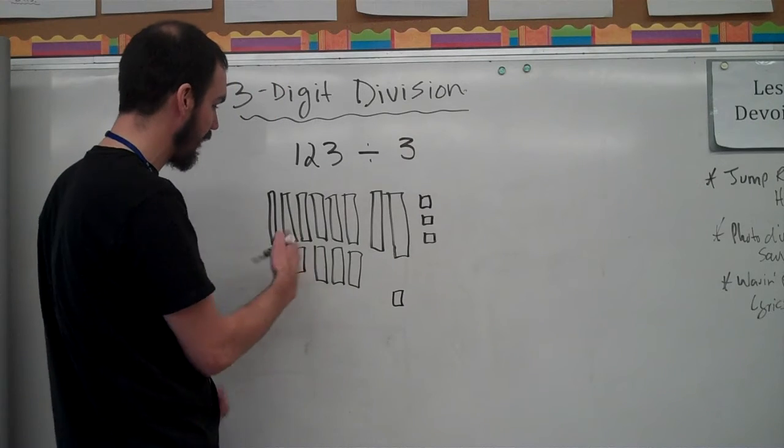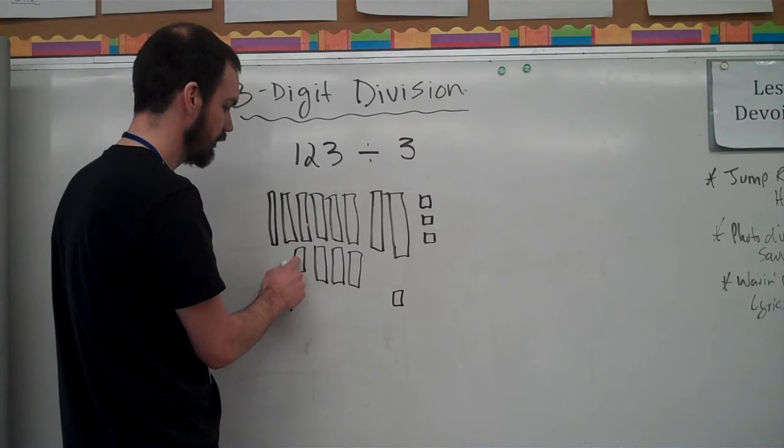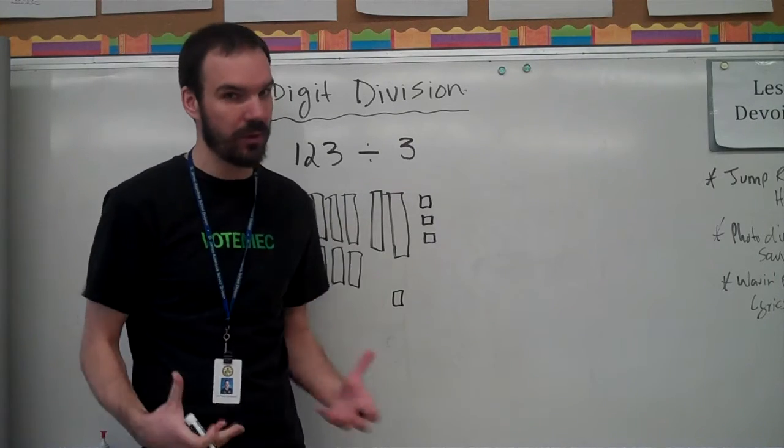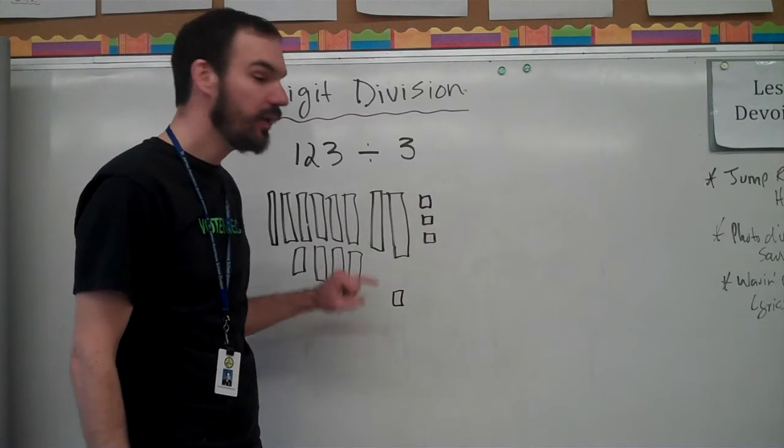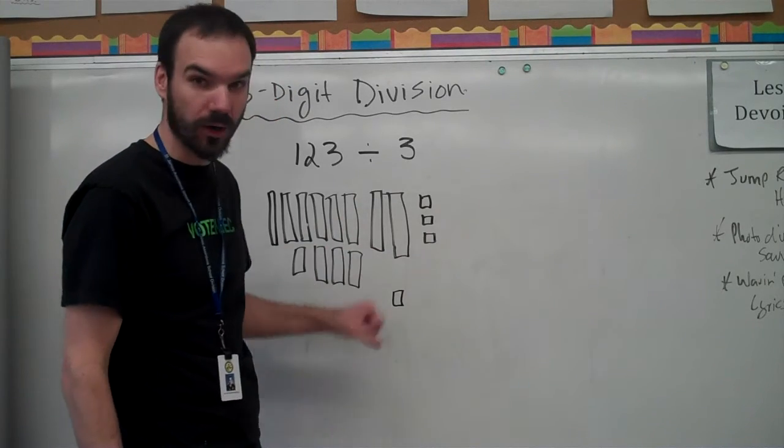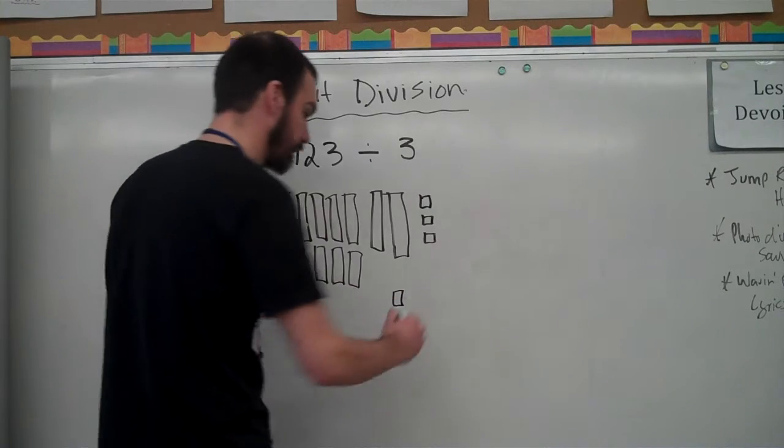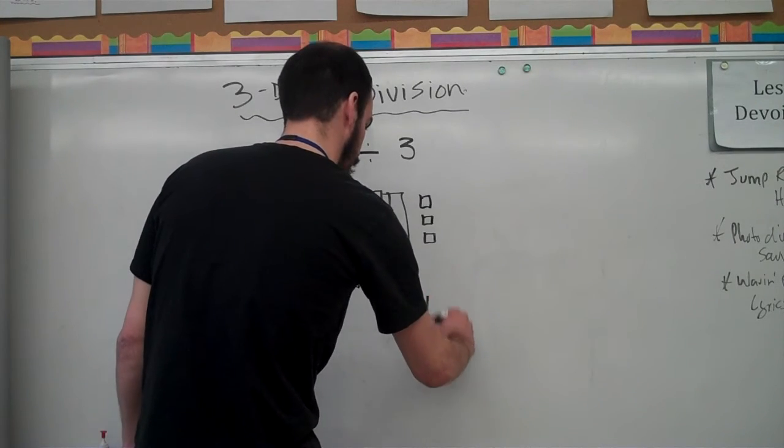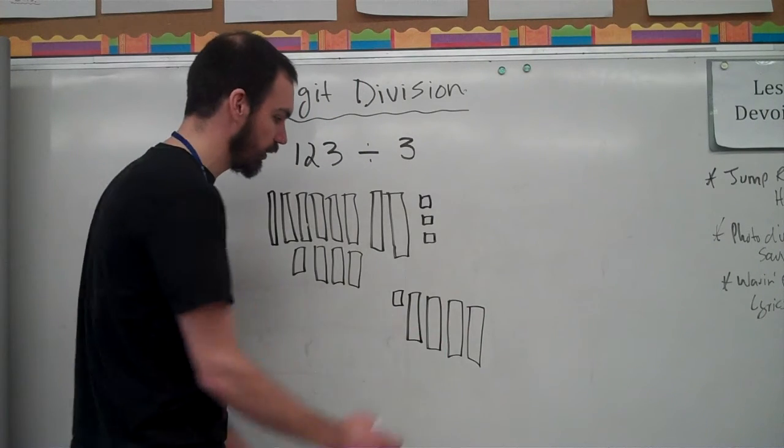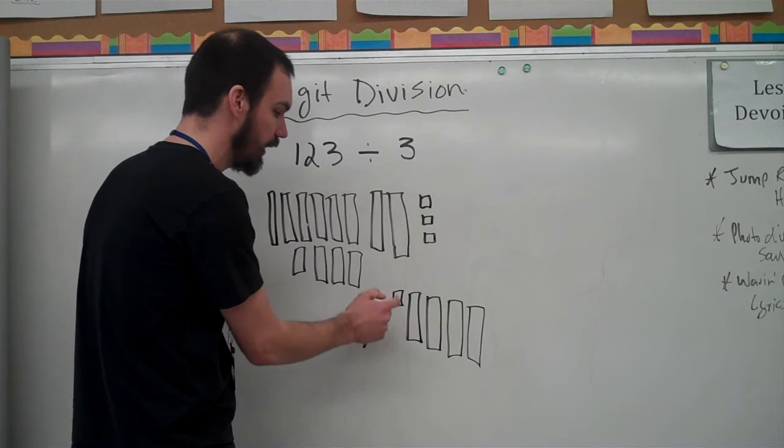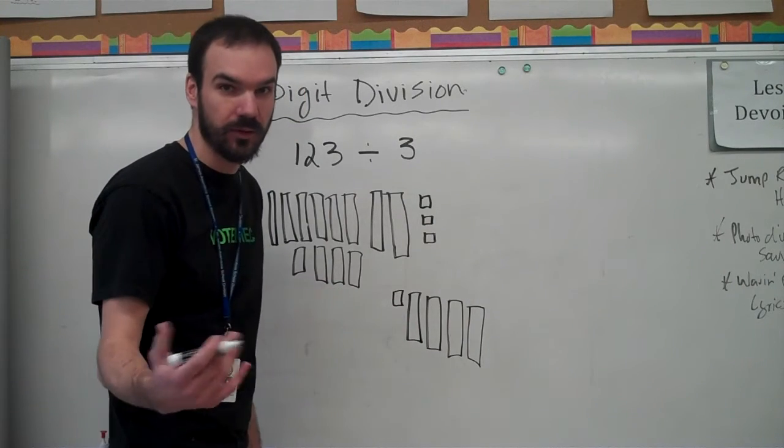So now I have how many tens? Well, 1, 2, 3, 4, 5, 6, 7, 8, 9, 10, 11, 12. I know because I know my math fact, my basic math fact, multiplication fact, that 12 divided by 3 is going to be 4. So that means that each group is not only going to get 1, but they're going to get 4 tens. And then that's my answer. I can go, well I have 4 tens, that's 40, and then I have 1. So 41 is going to be my answer.